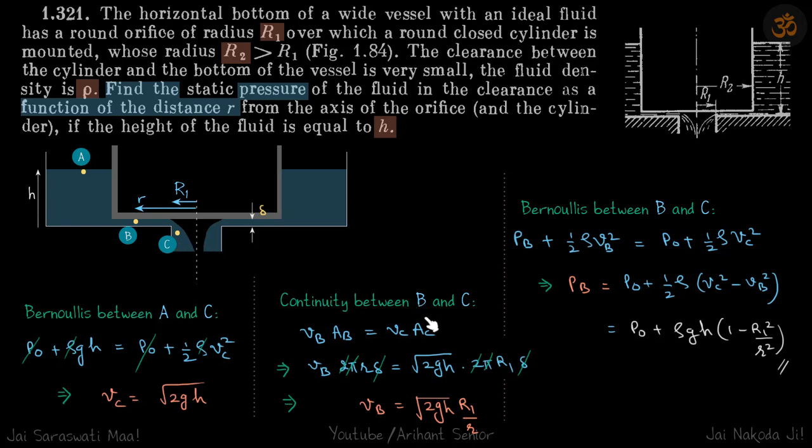Continuity between B and C: vB times the cross-sectional area at point B is equal to vC times AC. Now as discussed, it's a circular opening, so the cross-sectional area at this point will be delta into circumference. The circumference will be 2πr, so AB will be 2πr·delta.